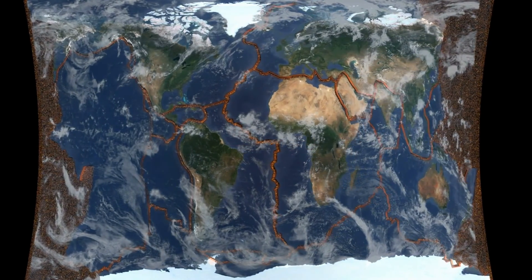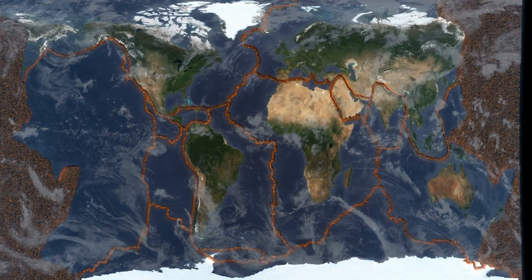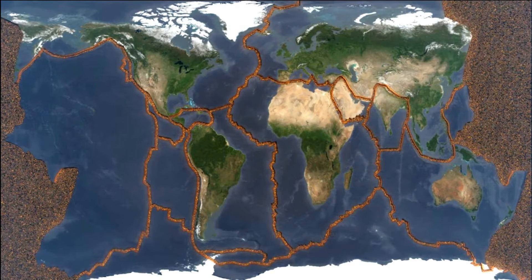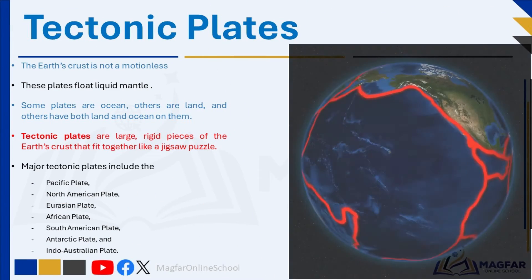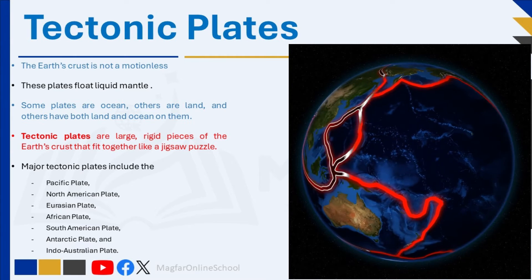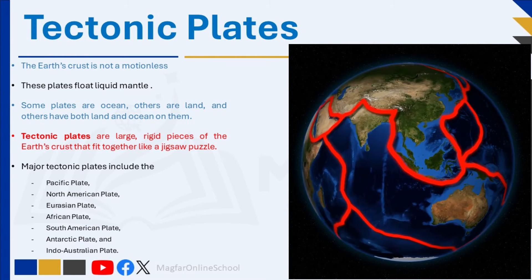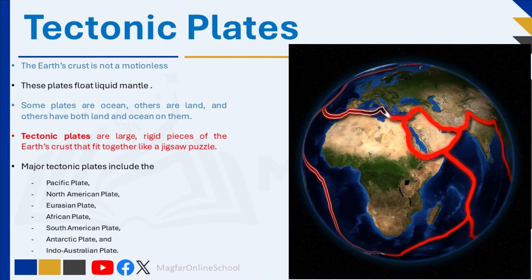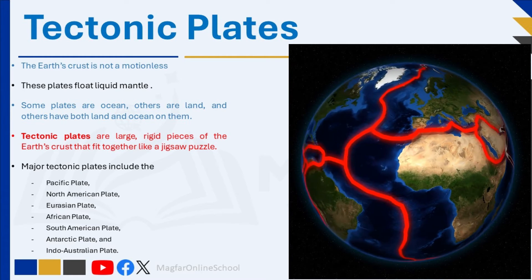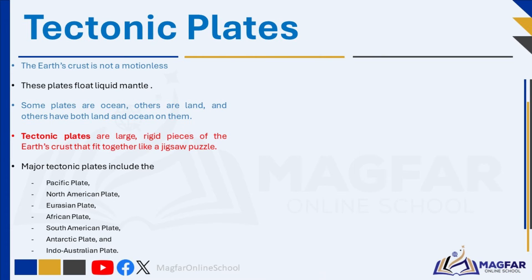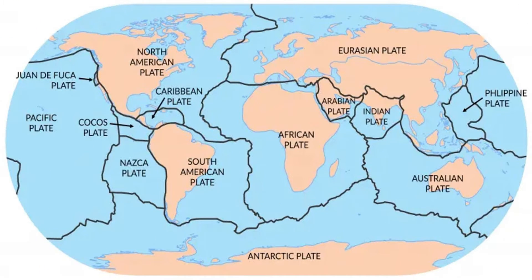Some plates are mostly ocean, others are mostly land, and others have both land and ocean on them. Tectonic plates are large, rigid pieces of the Earth's crust that fit together like a jigsaw puzzle and can be composed of both continental and oceanic crust. Major tectonic plates include the Pacific Plate, the North American Plate, the Eurasian Plate, the African Plate, the South American Plate, the Antarctic Plate, and the Indo-Australian Plate.